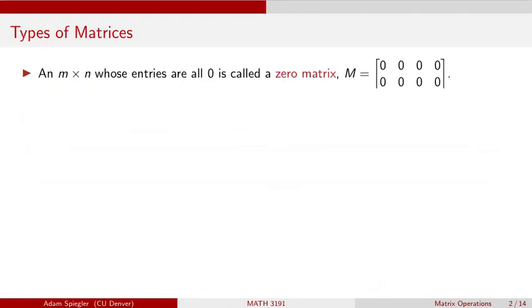So let's talk about a couple of matrices, types of matrices that come up frequently in linear algebra. So first, let's consider a matrix, an n by n matrix, whose entries are all equal to zero. That is called a zero matrix. So these can be of any size. In this case, we have two rows, four columns. So this is a two by four zero matrix. Just all of the entries inside the matrix are equal to zero.